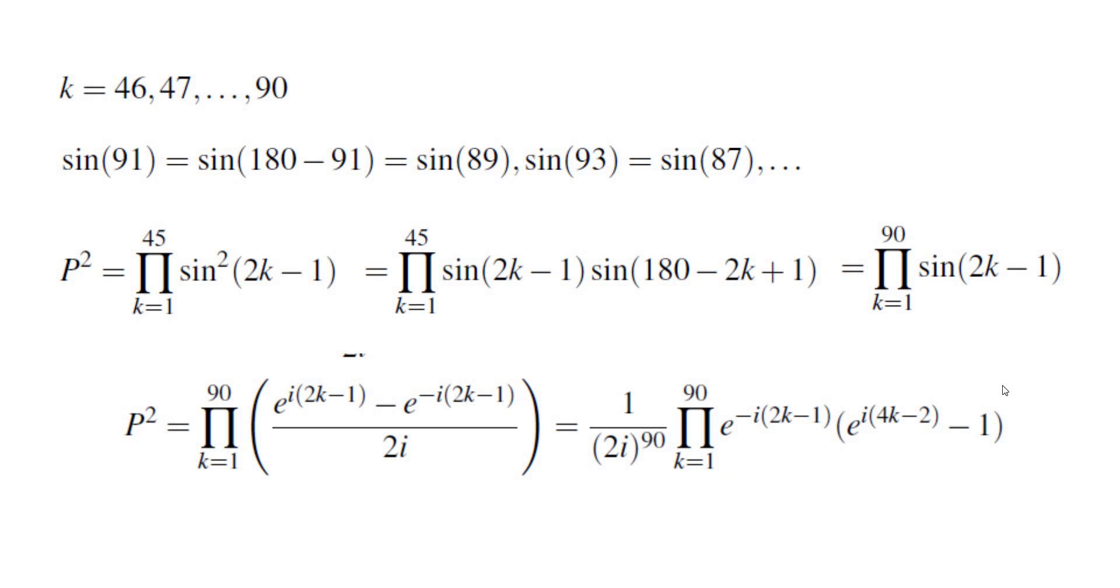As we discussed, P is a positive number because P is a product of a bunch of sines, and all of the angles are between 0 and 180.